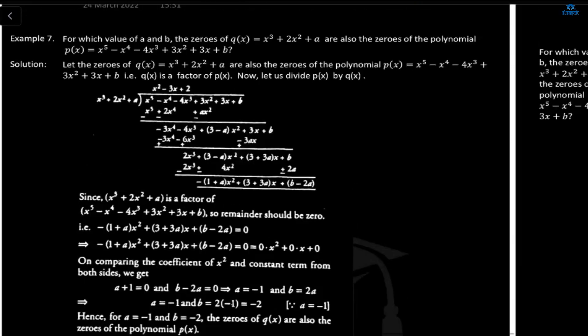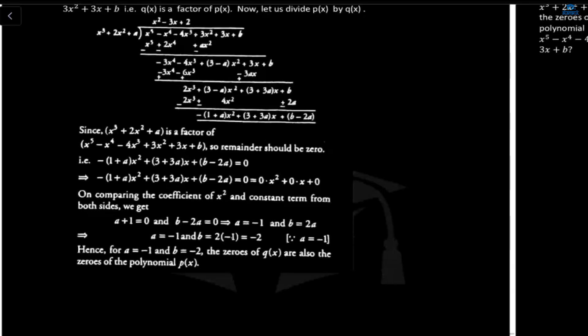Since q(x) is a factor of p(x), the remainder must be zero. We equate the entire remainder expression to zero: (−1 + A)x² + (3 + 3A)x + (B − 2A) = 0, which equals 0·x² + 0·x + 0. So every coefficient must equal zero independently, giving three equations: −1 + A = 0, 3 + 3A = 0, and B − 2A = 0.